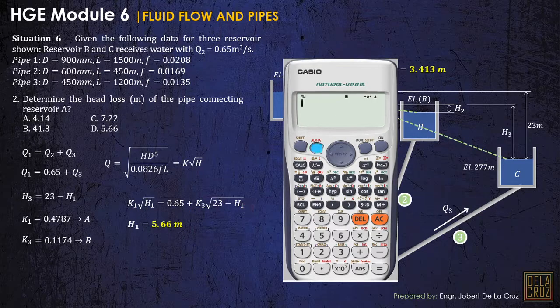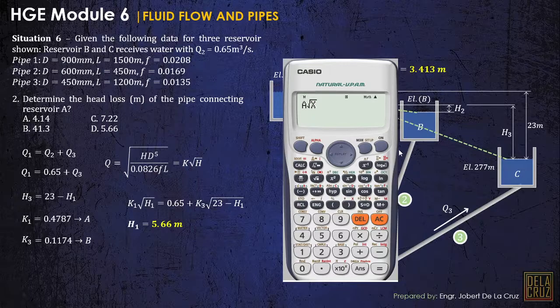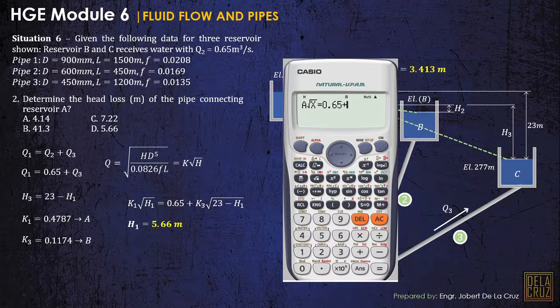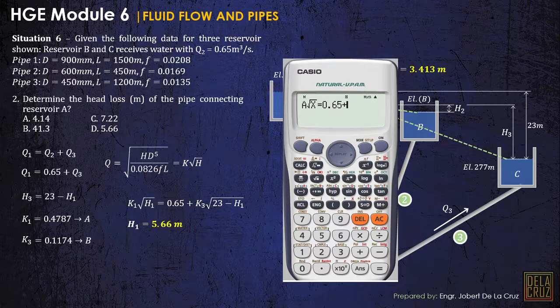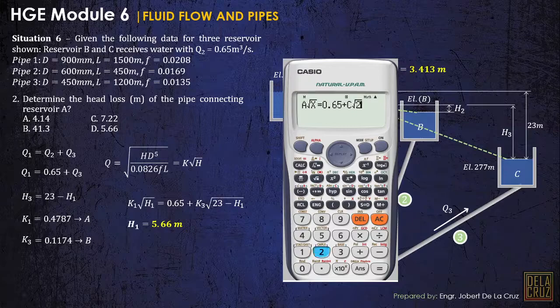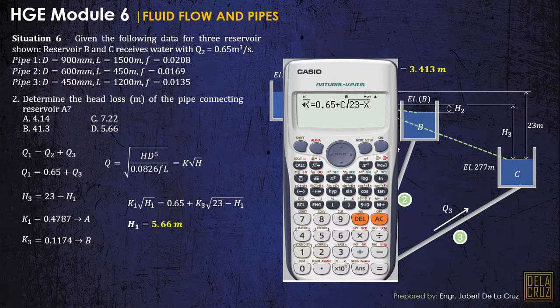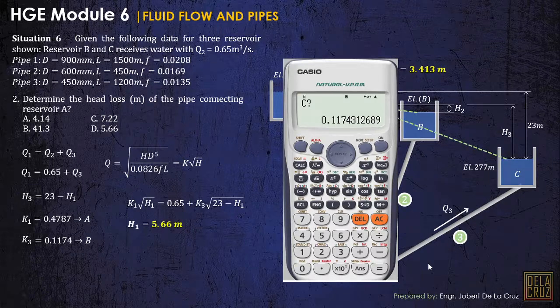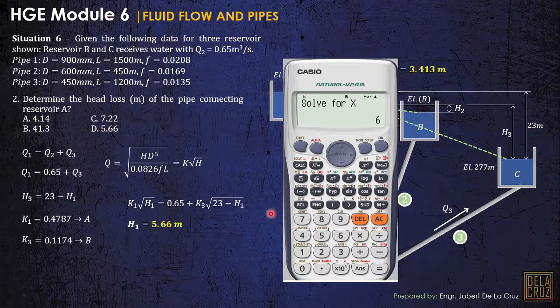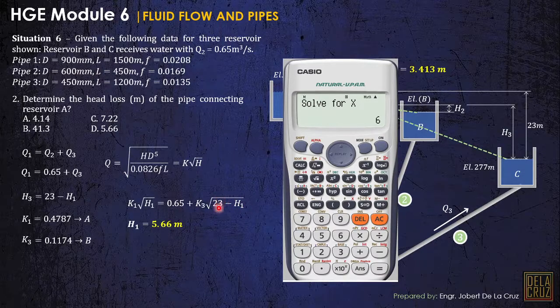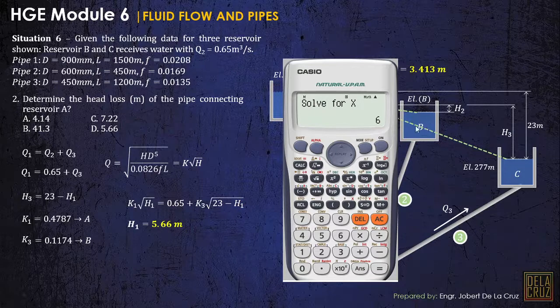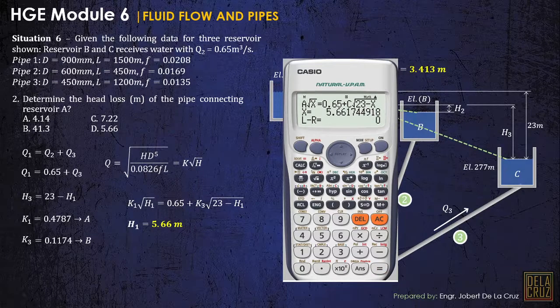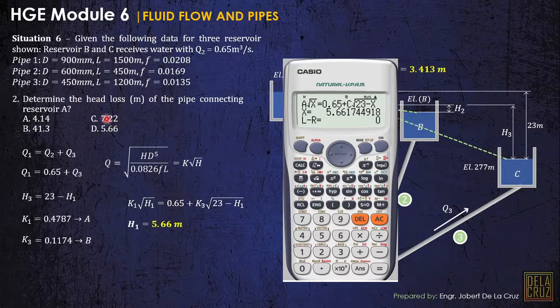So let me show you how to do that in the calculator. K1 is stored on A. Then square root of H sub 1, that will be our X here. Alpha equals 0.65 plus K3. So I store this one to C, remember, that is C. Then square root of 23 minus X. So that is our equation. Shift solve. So of course A is in A and K sub 3 is in C. Then H sub 1 should be less than 23 by this equation. So it's okay that 6 is the initial value that we'll search, based on the search of our calculator. And that is 5.66.